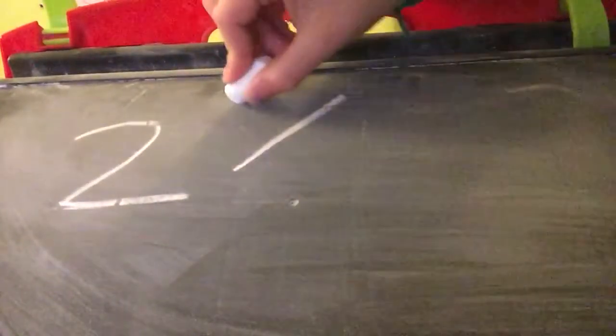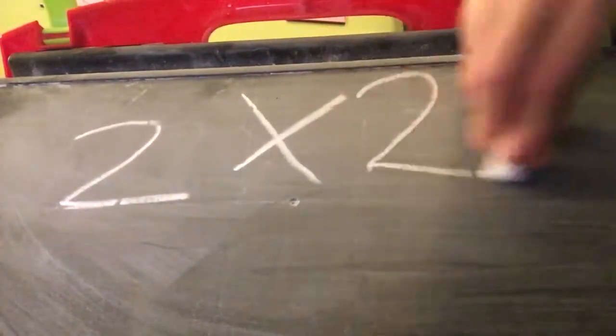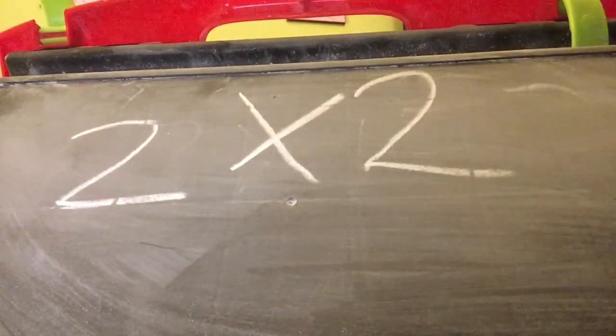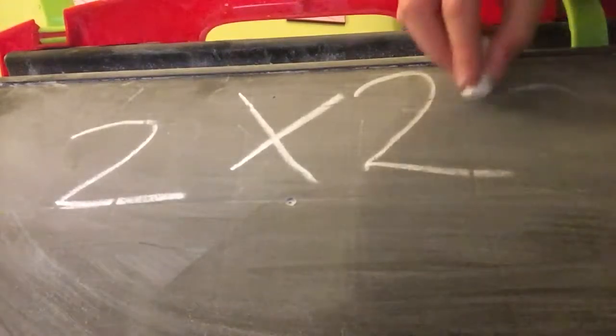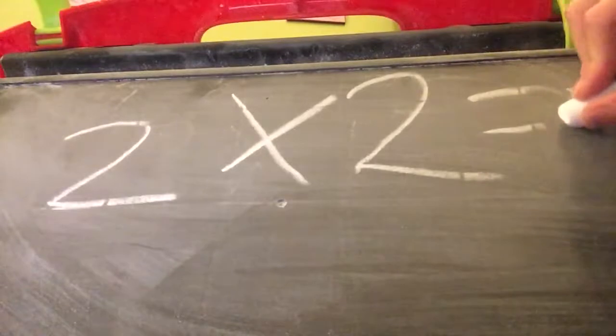Two times two. This one's a lot trickier. Two times two — let's count by twos: two, four. So that must equal four.